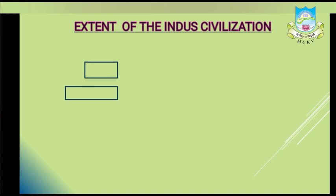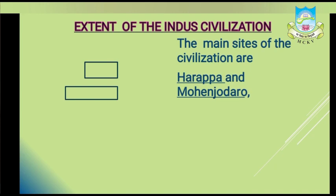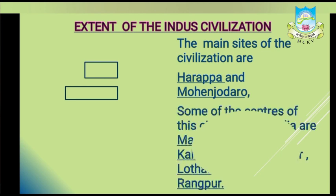As already discussed, Harappa and Mohenjo-Daro were the two main centers of the civilization, but there were other sites as well. Some of the centers of the civilization in India are Manda, Banwali, Kalibangan, Alamgirpur, Lothal, Rupar, Rangpur, and others.